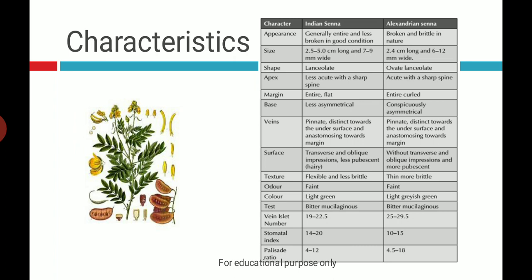The surface shows transverse oblique impressions and is less pubescent in Indian Senna, sometimes hairy. In Alexandrian Senna, the surface also shows transverse oblique impressions but is more pubescent compared to Indian Senna. Texture is flexible and less brittle in Indian Senna, while the wild variety is more brittle. It gives a faint odour. The colour of Indian Senna is light green and Alexandrian Senna is light greyish. Both have a bitter mucilaginous taste.